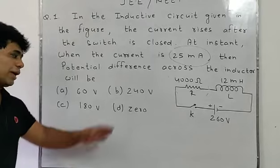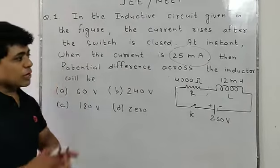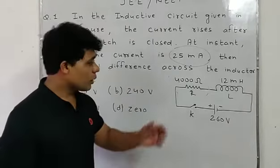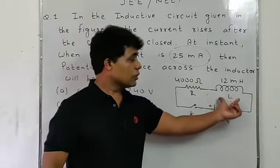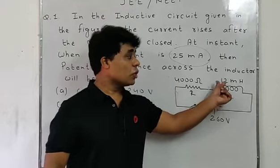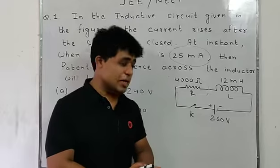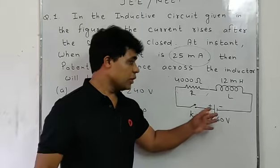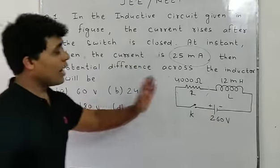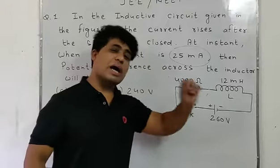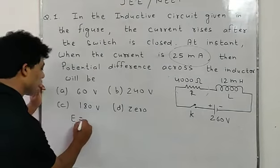We are given four options: 60 volt, 240 volt, 180 volt, and zero. The circuit has a resistor of 4000 ohm and an inductor of 12 millihenry — henry is the unit of inductance — connected to a 60 volt battery.